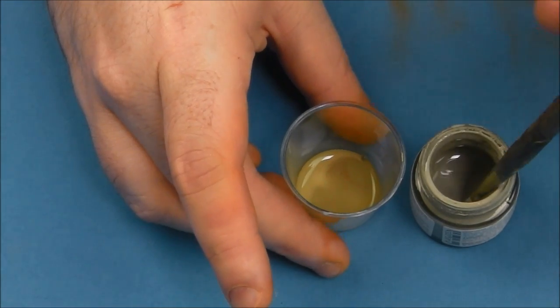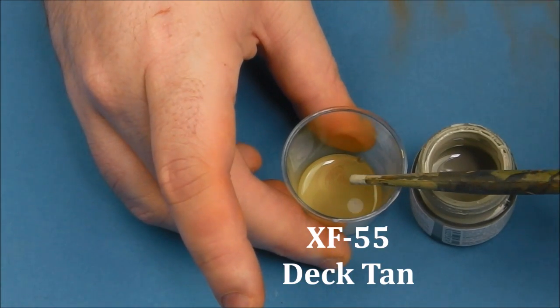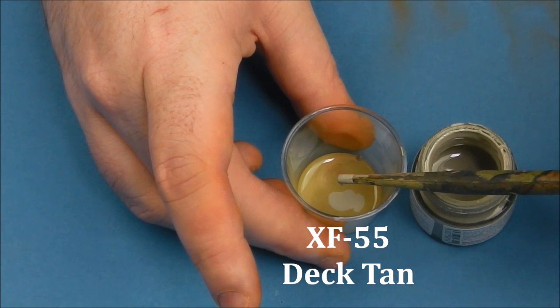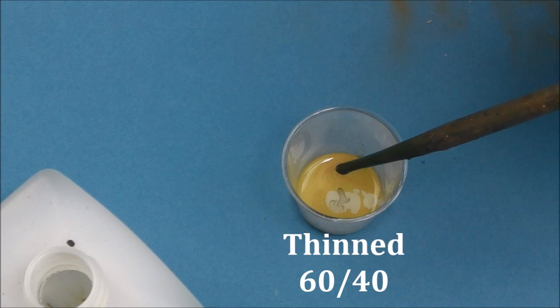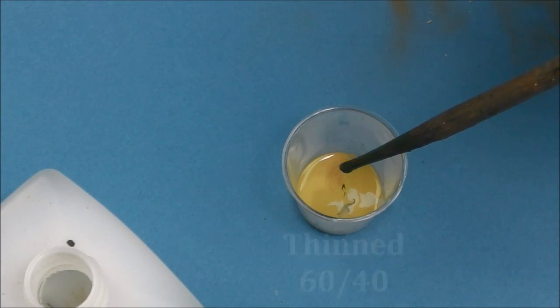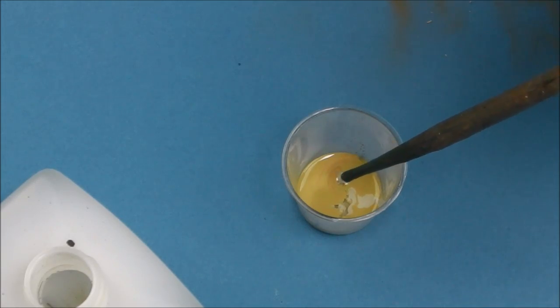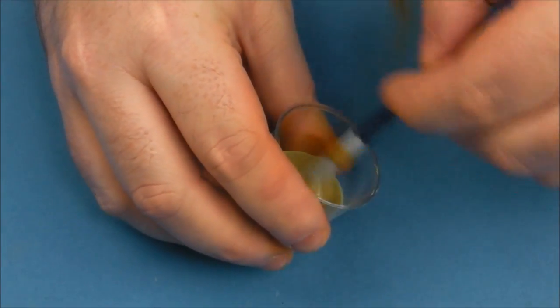I'm going to take some XF60 and XF55 deck tan and mix this roughly 60% or 70% dark yellow to deck tan, then mix it with Tamiya thinner roughly 60% thinner to 40% paint.